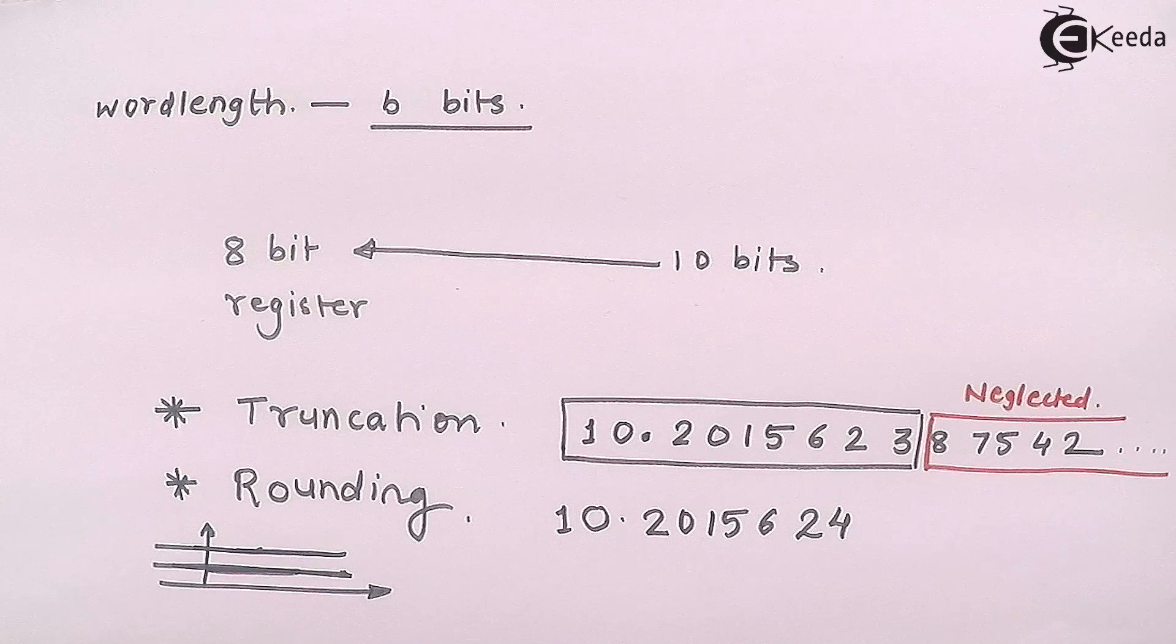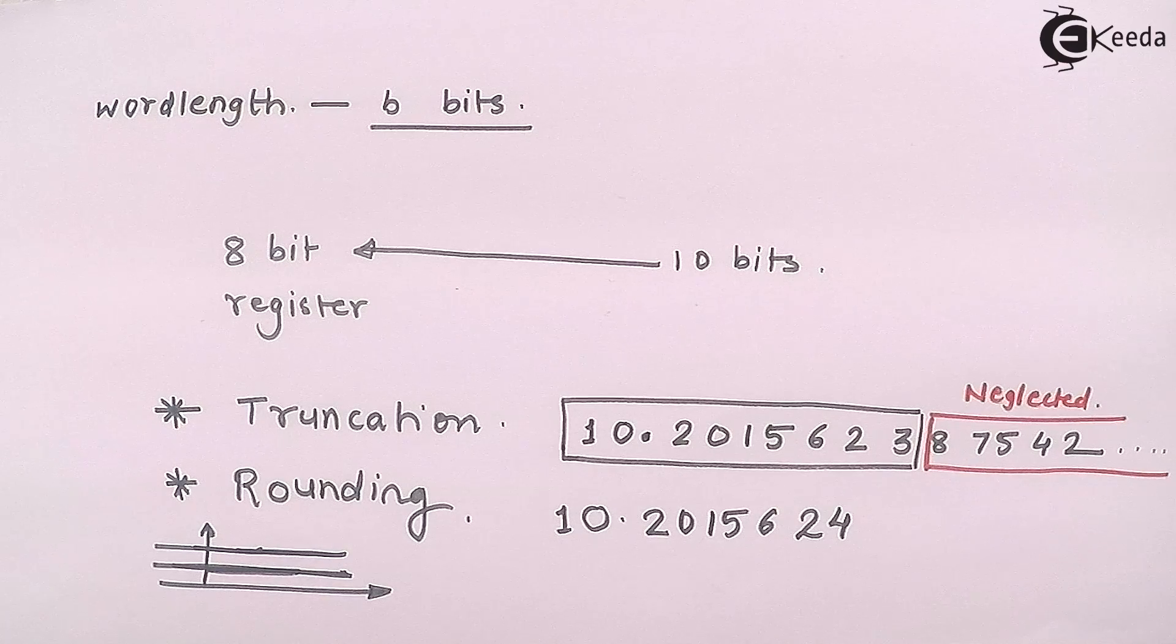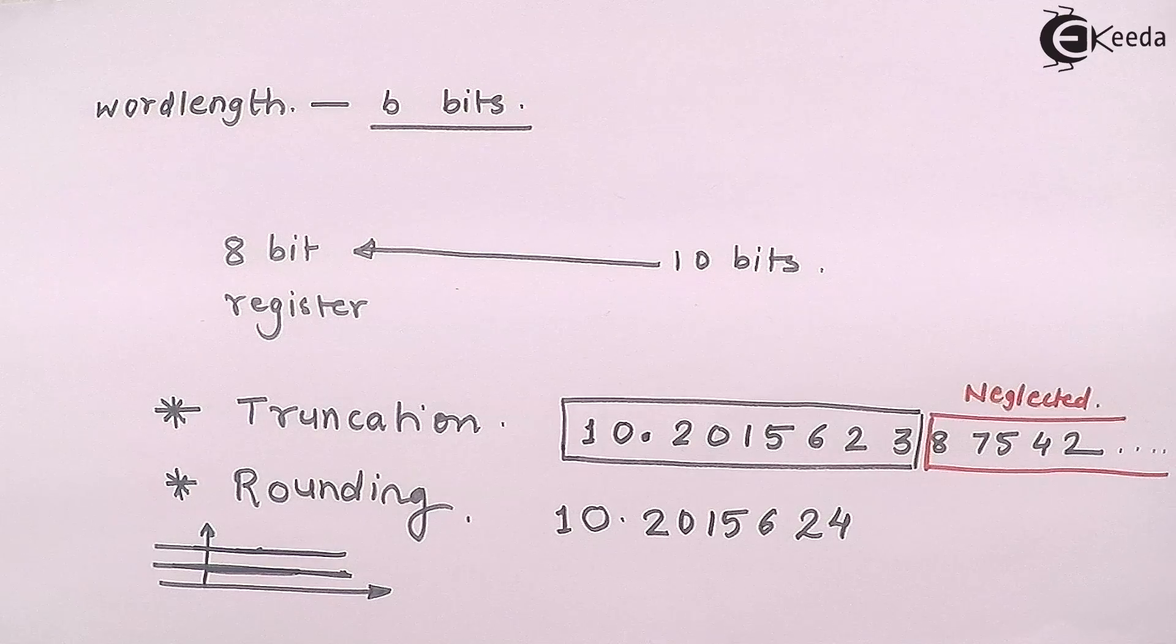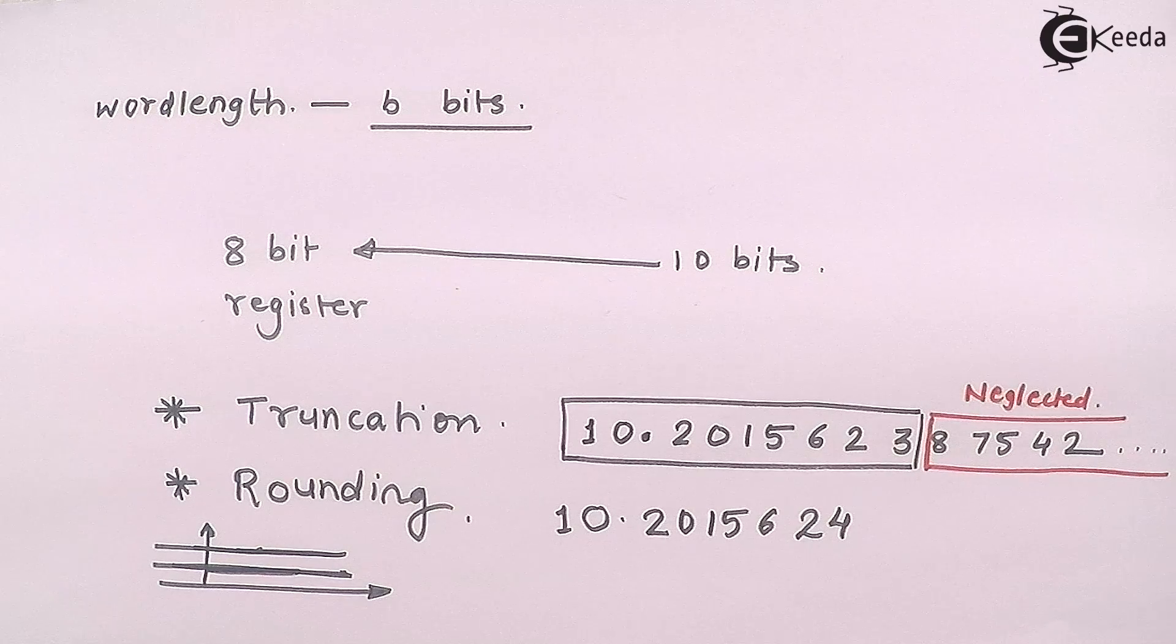So in this way we have two methods, truncation and rounding. I hope that you have understood what do you mean by truncation and rounding. Thank you.